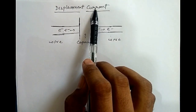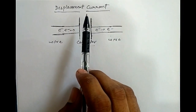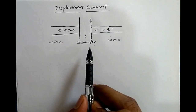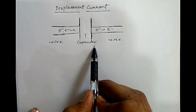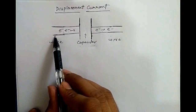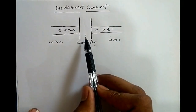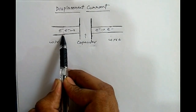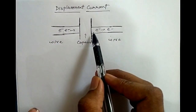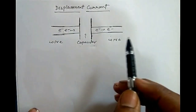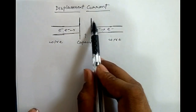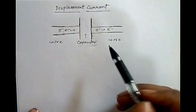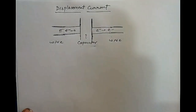Displacement current is one of the basic concepts essential for the existence of electromagnetic waves in vacuum. The best example to understand displacement current is a capacitor. When we apply AC supply, the current in conductors is due to electrons, whereas there is no flow of electrons between the capacitor plates, but still AC current can pass through the capacitor easily. This is possible because of displacement current.